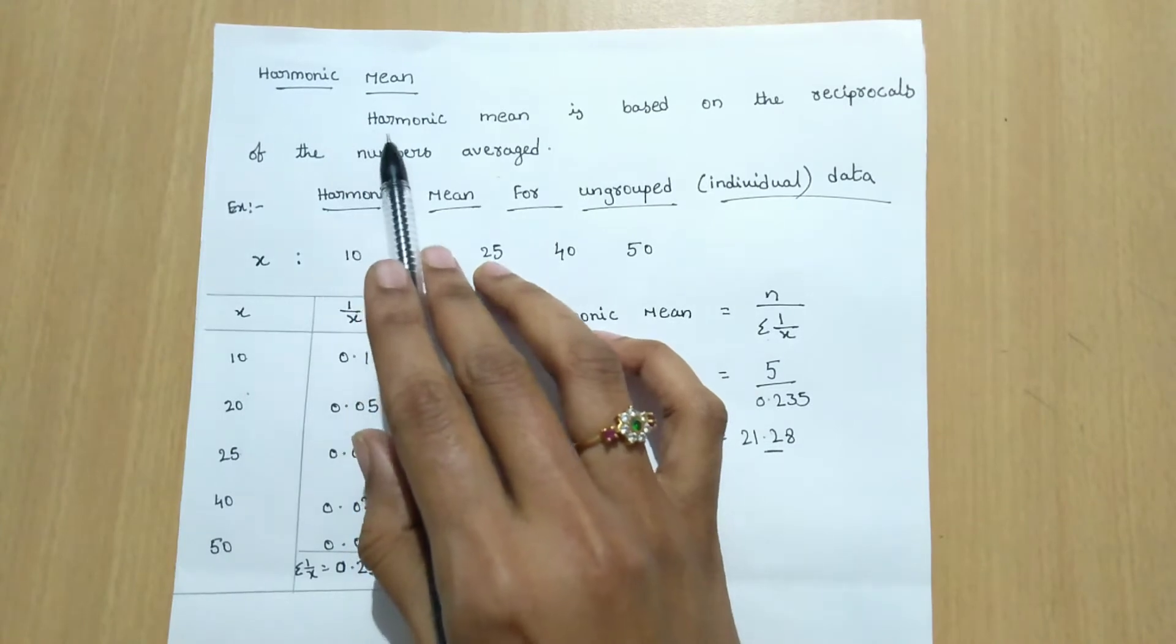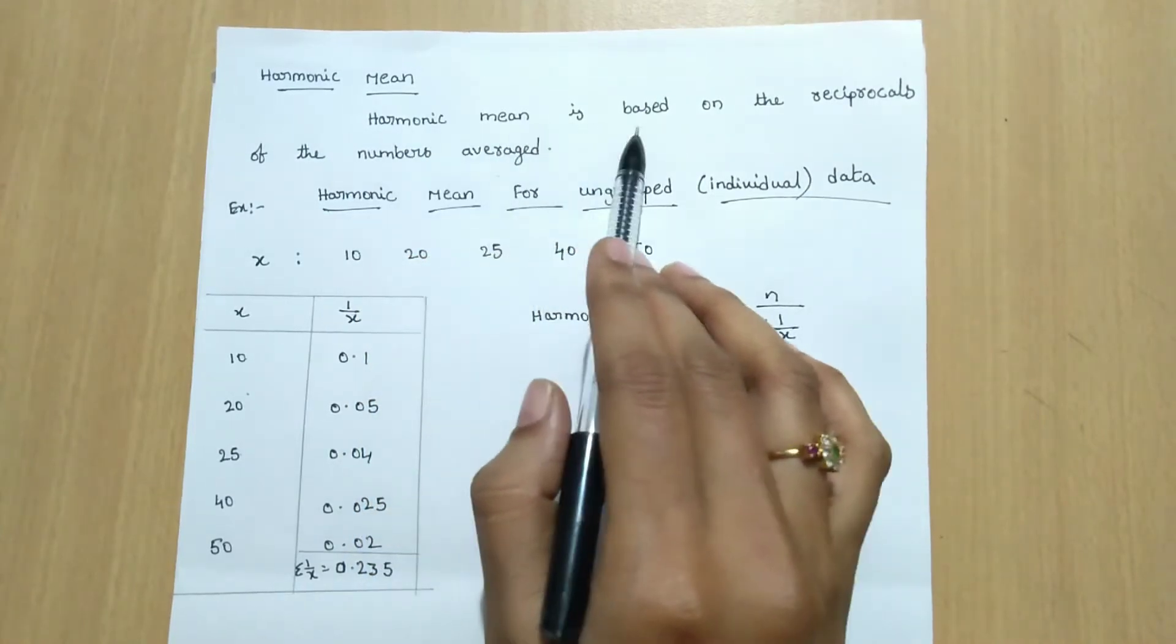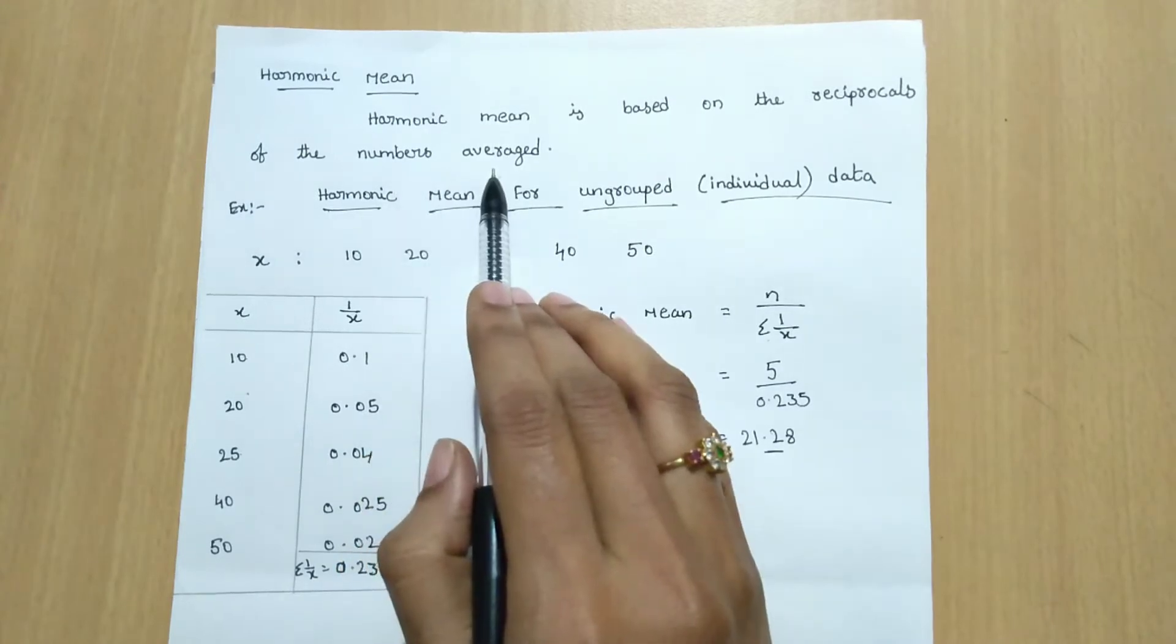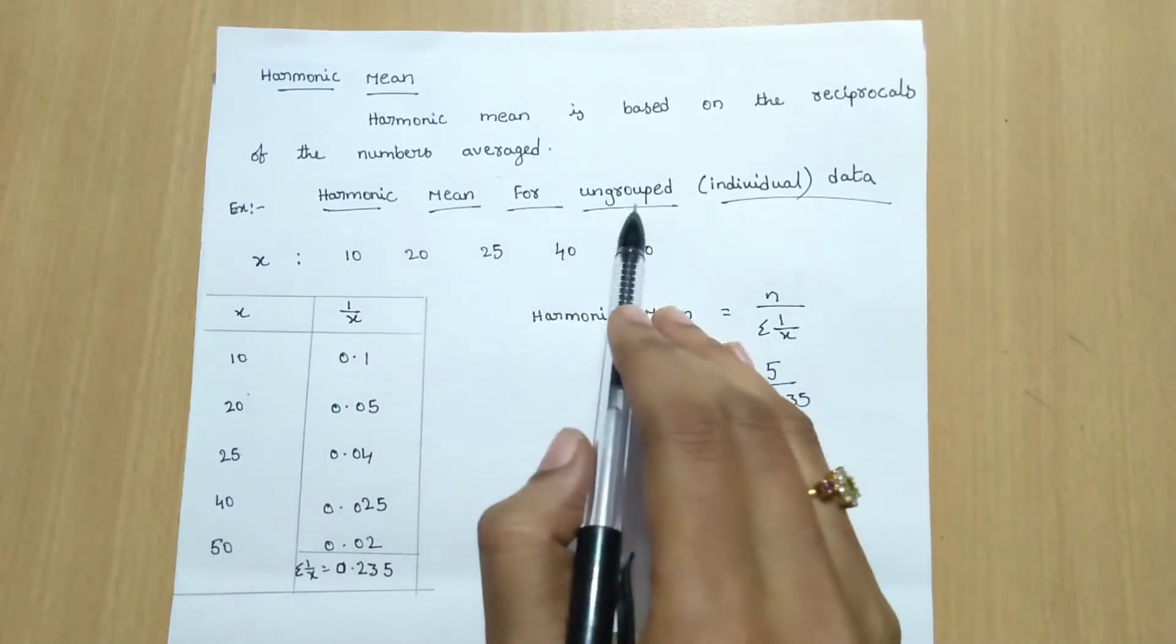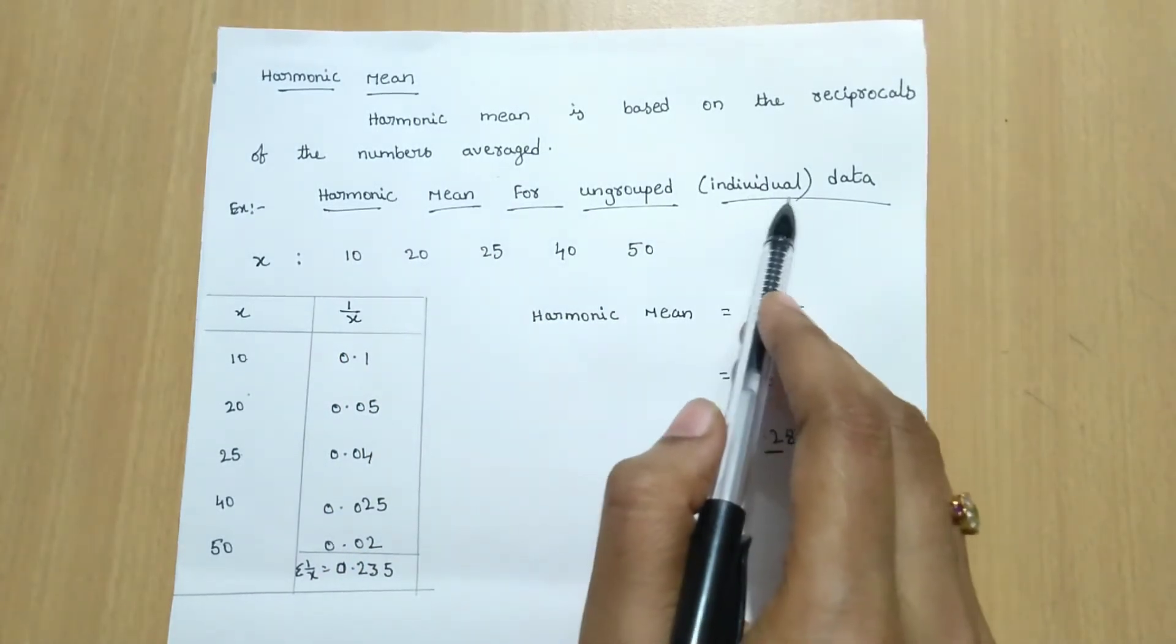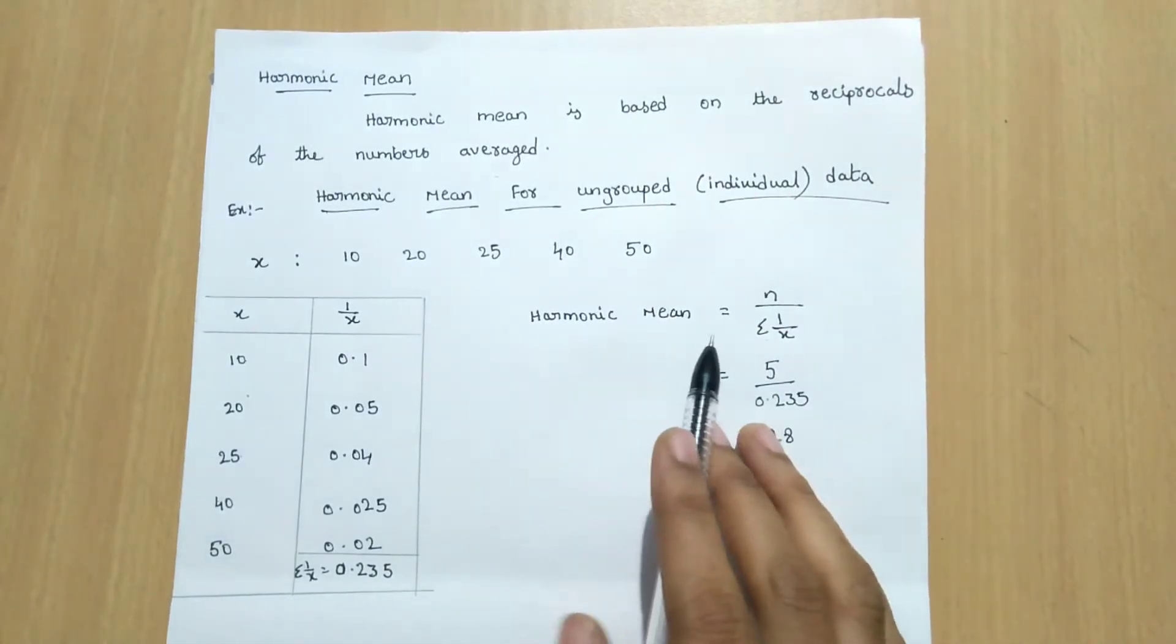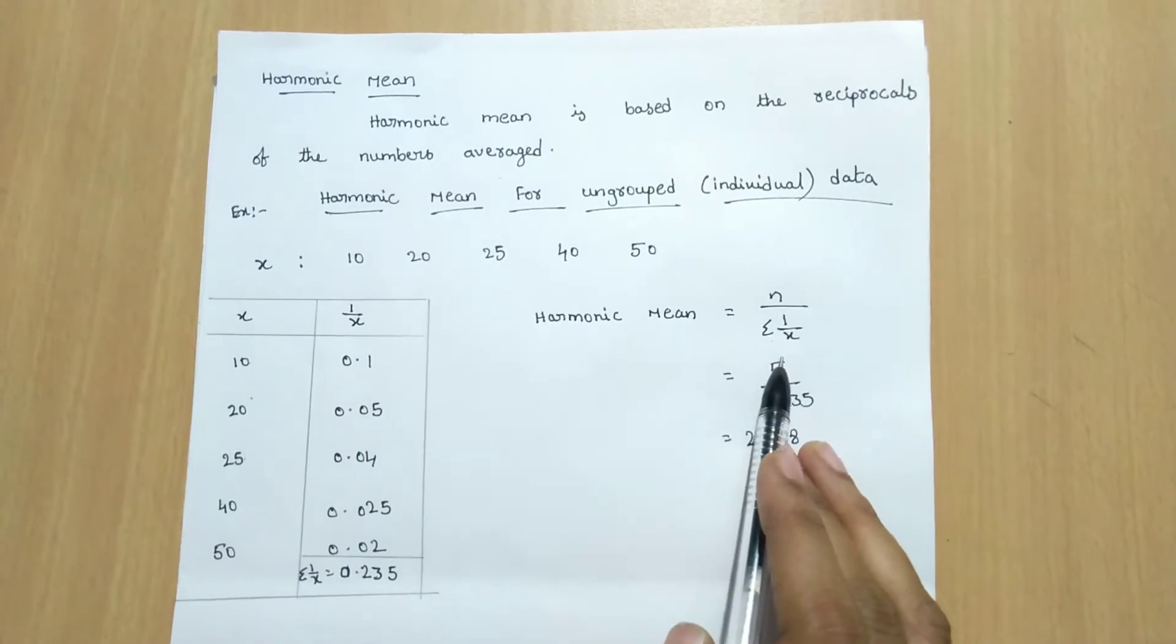Harmonic mean. Harmonic mean is based on the reciprocals of the numbers averaged. Harmonic mean for ungrouped data, that means individual data. The formula is harmonic mean equal to n by summation 1 by x.